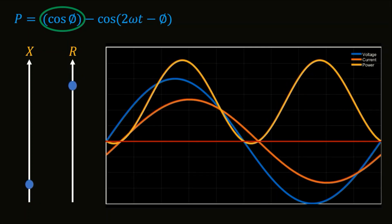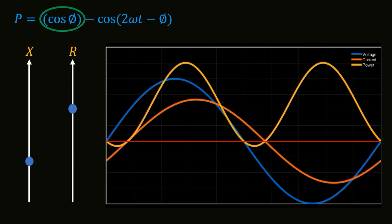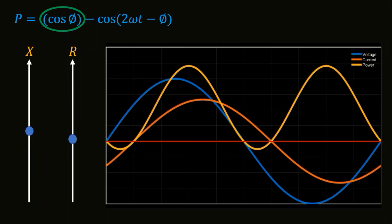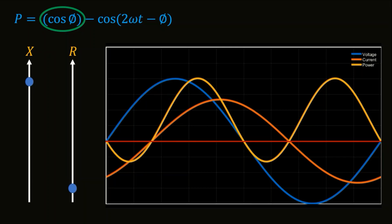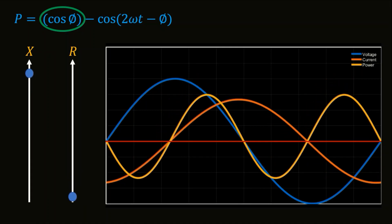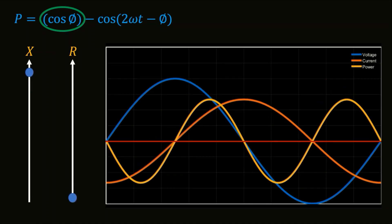Here as you can see that with an increase in X the curve is shifting downwards which simply means that more and more energy is being stored and sent back in the circuit.